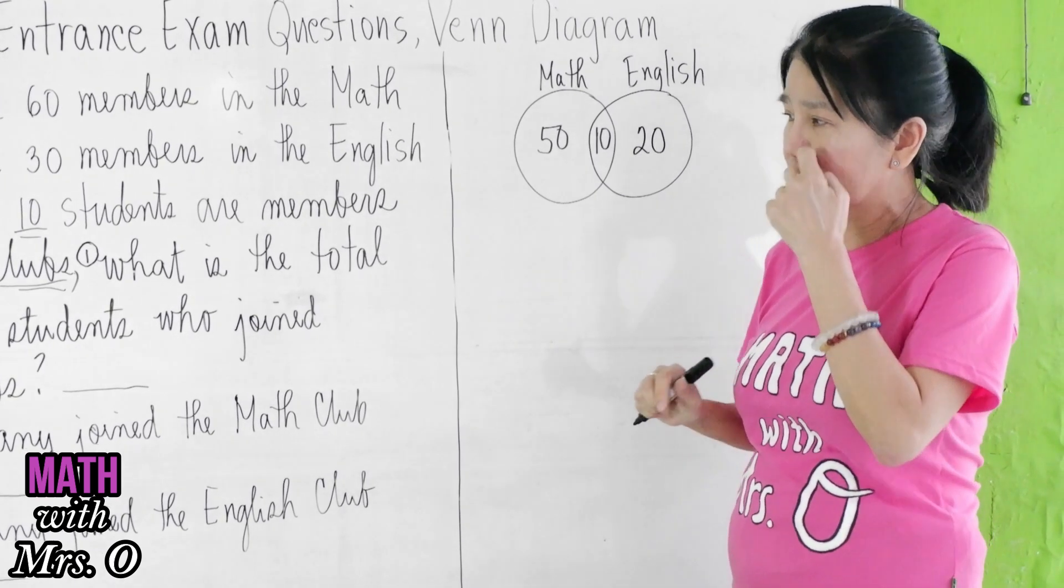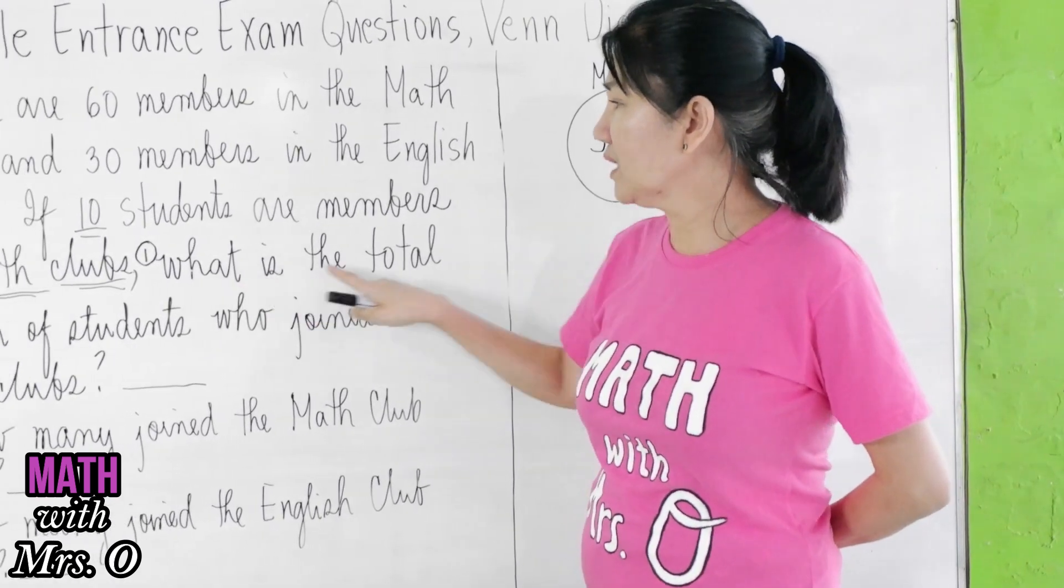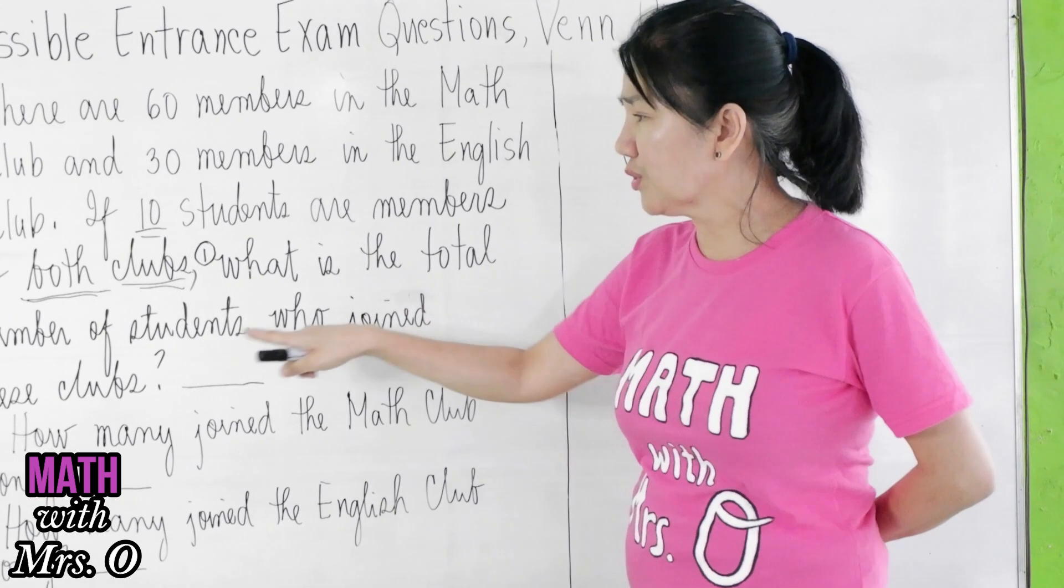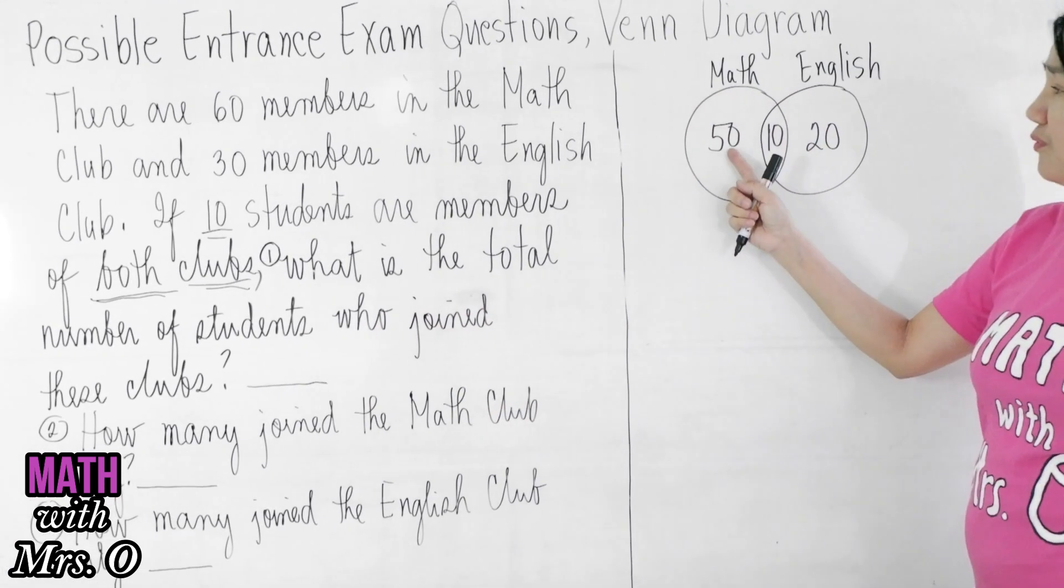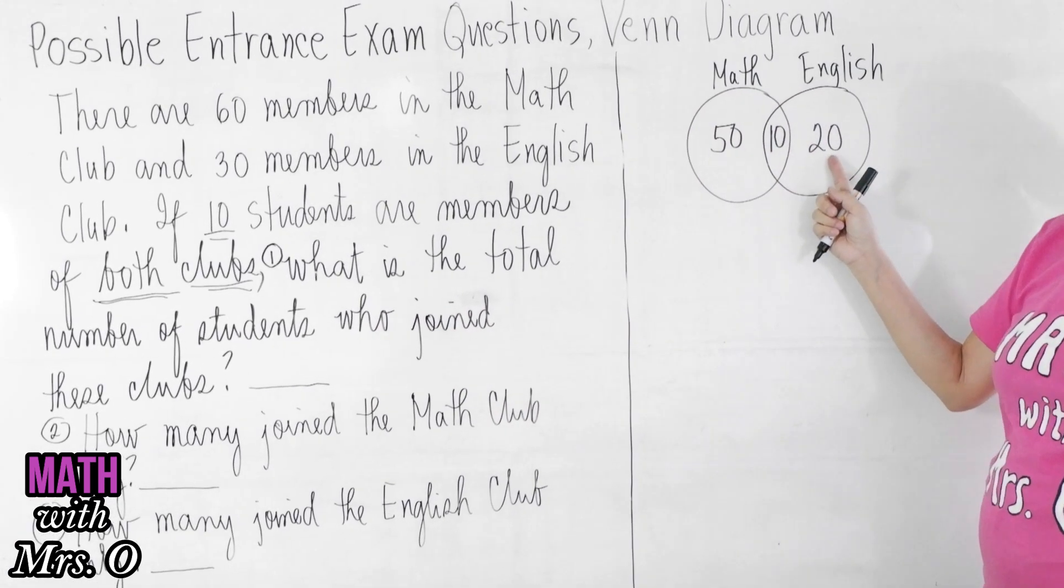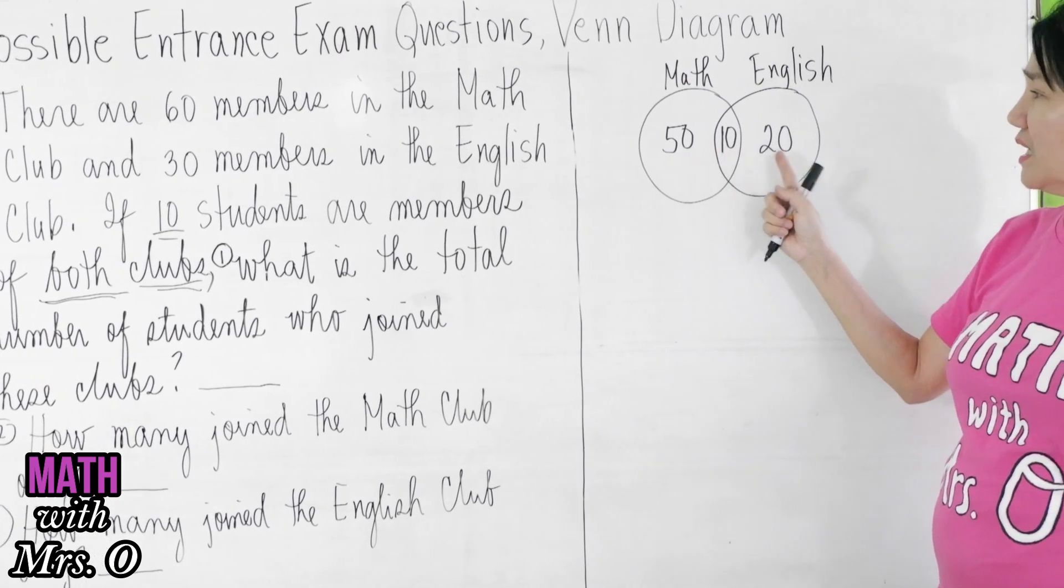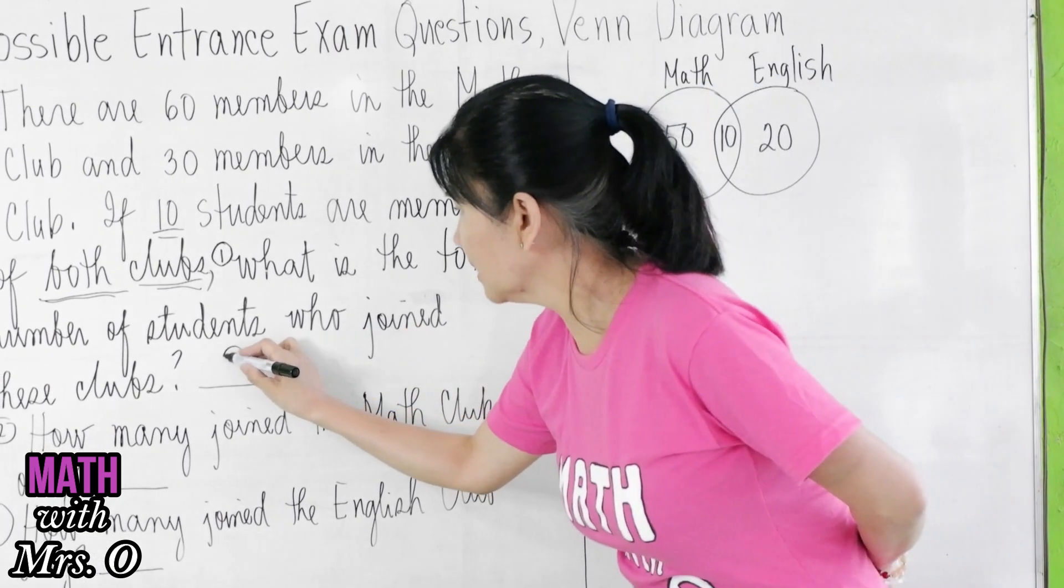Now let's answer the question. The first question: what is the total number of students who joined this club? You have 50 plus 10, 60 plus 20, 50, 60, 80. So you have a total of 80.